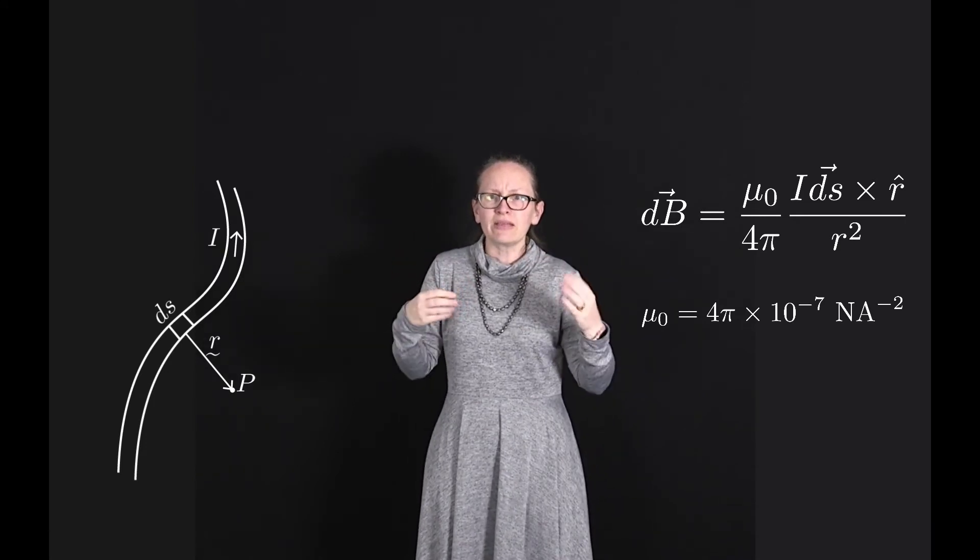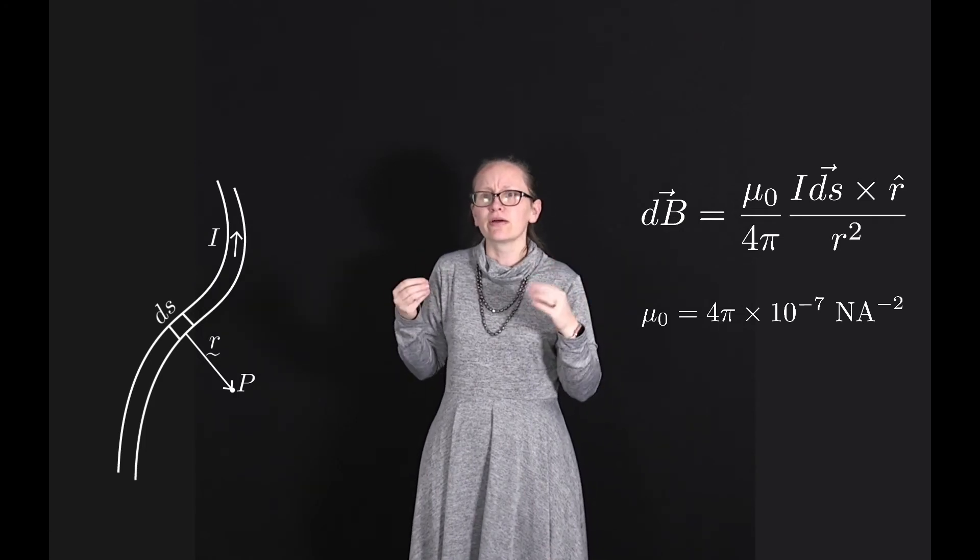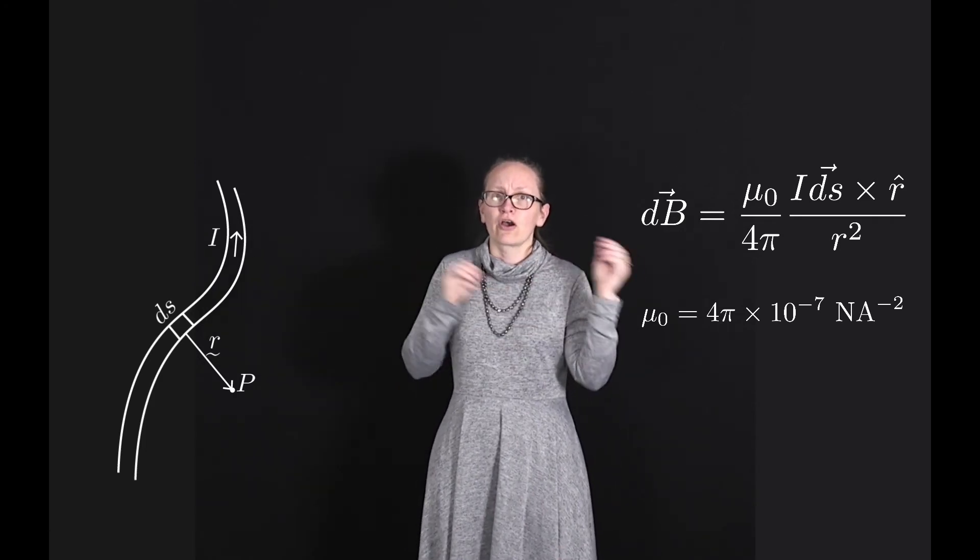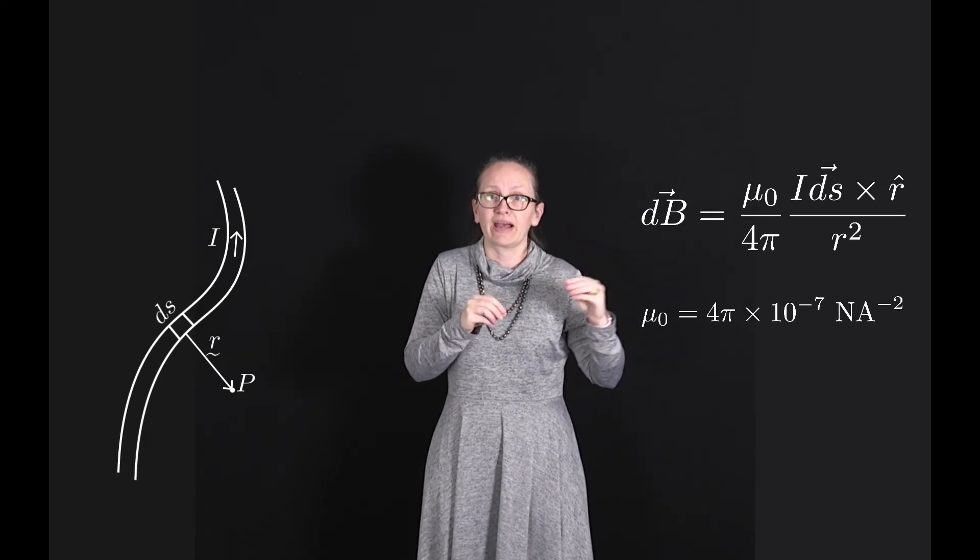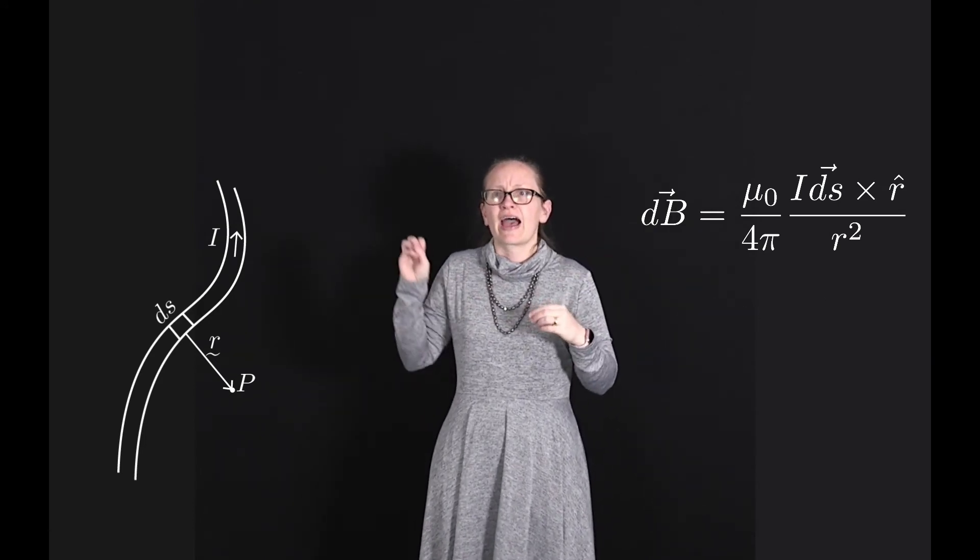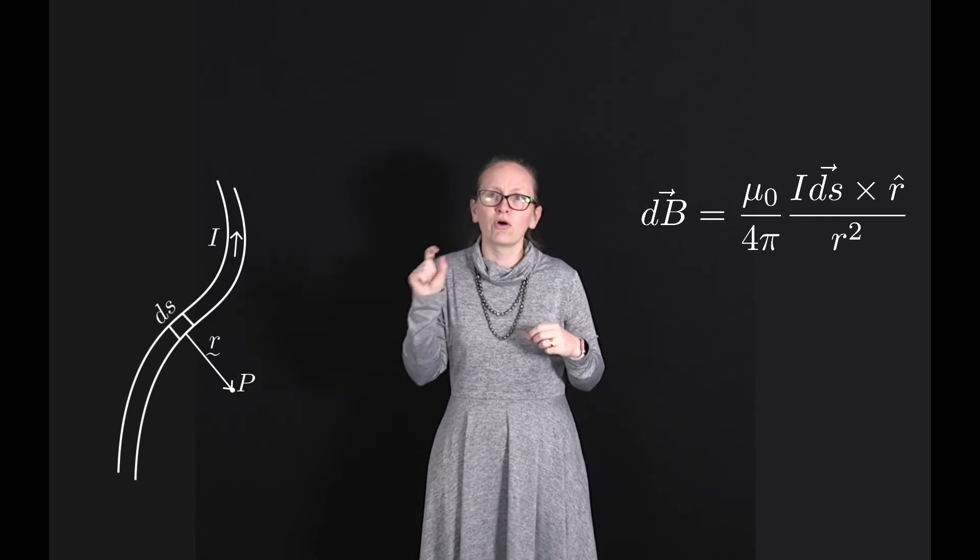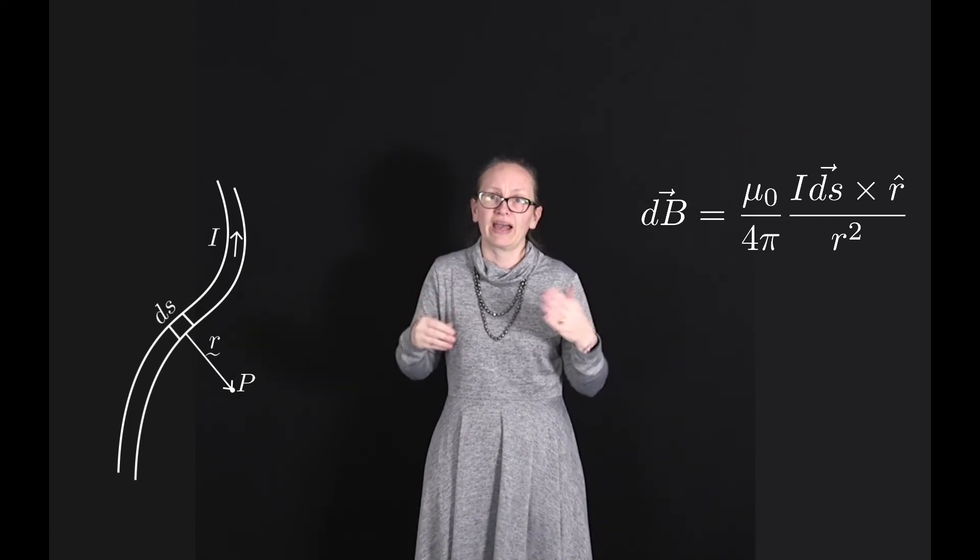In many ways the Biot-Savart law is a bit like Coulomb's law is for charges only for the magnetic field created by current carrying wire. So it tells us how much magnetic field a small increment of current carrying wire creates.